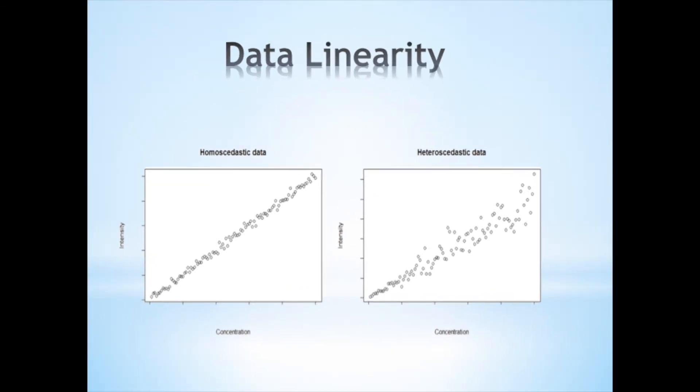A type of approach to determining the operational limits of the technique is through a calibration curve. These data should be linear and homoscedastic. Homoscedasticity describes a situation in which the error term, that is the noise, is the same across all values of the independent variables. Heteroscedasticity is present when the size of the error term differs across values of an independent variable. Increasing heteroscedasticity affects linearity of the calibration curve.